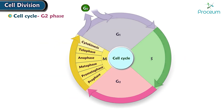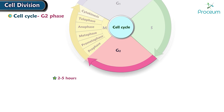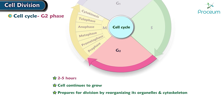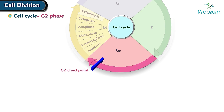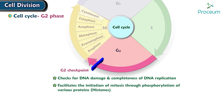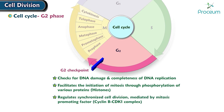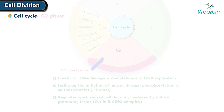G2 phase: This phase lasts for approximately 2 to 5 hours. During G2, the cell continues to grow and prepares for division by reorganizing its organelles and cytoskeleton. This phase is characterized by further synthesis of proteins required for mitosis. At the end of G2 phase and before entering mitosis, there is a checkpoint known as the G2 checkpoint, which checks for DNA damage and completeness of DNA replication. It facilitates the initiation of mitosis through phosphorylation of various proteins, such as histones, and regulates synchronized cell division mediated by mitosis-promoting factor, the cyclin B–CDK1 complex.